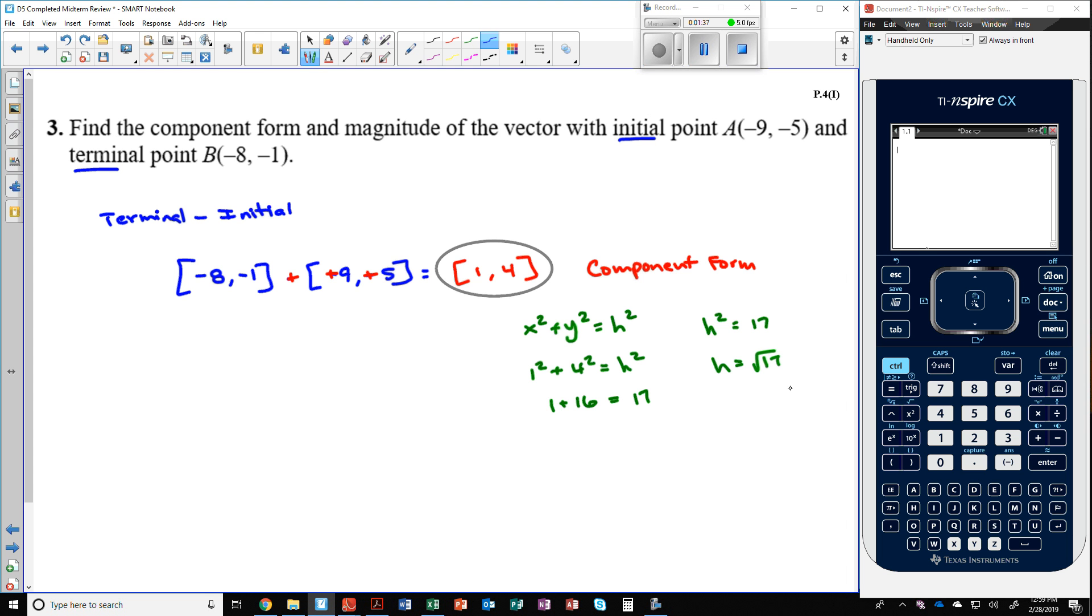The symbol for magnitude is kind of like the absolute value symbol. And this vector was given by the points AB, and the terminal was the B so I put it second like that. This is the correct symbol for this. So that would be our answer here.